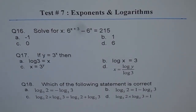Here are three multiple choice questions. Question 16: Solve for x — 6 to the power of x plus 3, minus 6 to the power of x, equals 215.